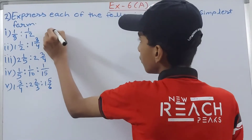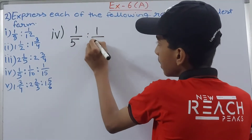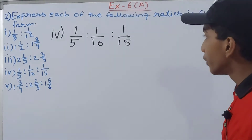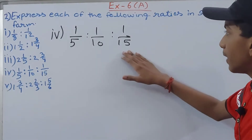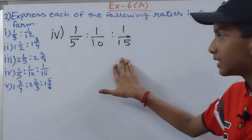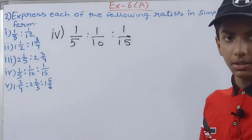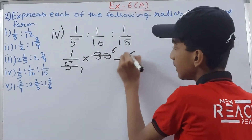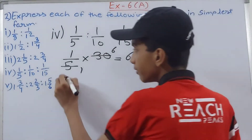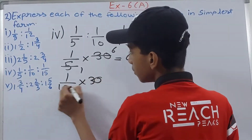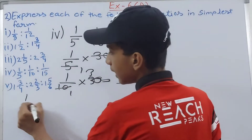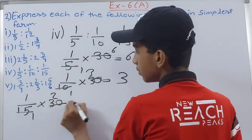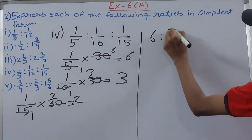The fourth part is 1/5 : 1/10 : 1/15. The LCM of 5, 10, and 15 is 30. So 1/5 × 30 = 6, 1/10 × 30 = 3, and 1/15 × 30 = 2.